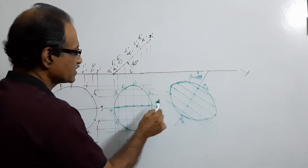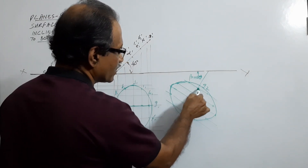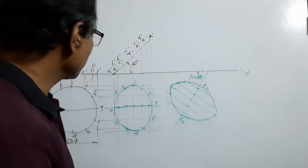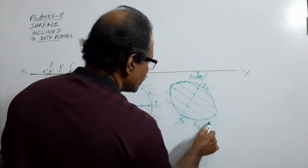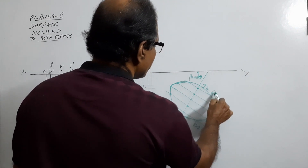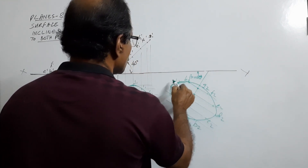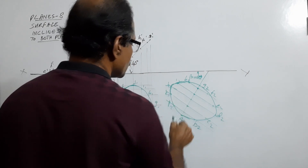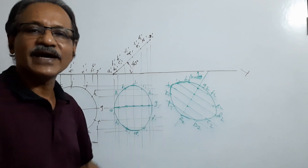My distances are not correct — actually these two have to be more and these have to be less. Okay, so this is the plan we draw: A2, B2, C2, D2, E2, F2, G2, H2, I2, J2, K2, and L2. This is the final plan. Now draw vertical projectors.